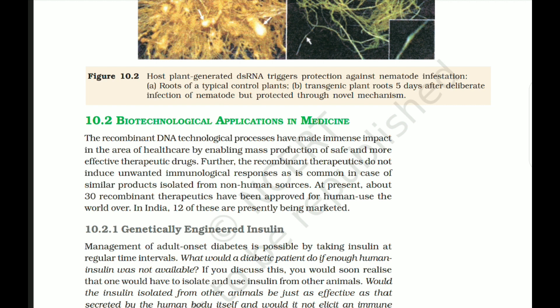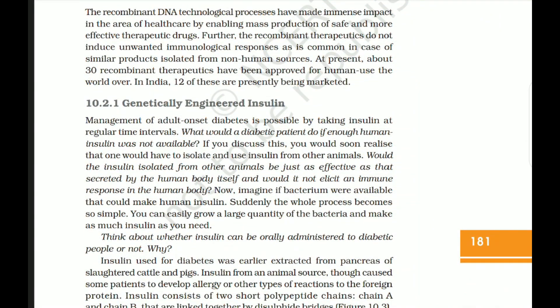Recombinant DNA technological processes have made immense impact in healthcare by enabling mass production of safe and more effective therapeutic drugs. Recombinant therapeutics do not induce unwanted immunological responses, as is common with similar products isolated from non-human sources. At present, about 30 recombinant therapeutics have been approved for human use worldwide; in India, 12 of these are presently being marketed. Management of adult-onset diabetes is possible by taking insulin at regular intervals. Insulin used for diabetes was earlier extracted from the pancreas of slaughtered cattle and pigs, which caused some patients to develop allergies.